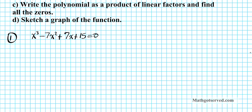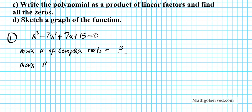So for part A, we're going to use the fundamental theorem of algebra to state the maximum number of complex roots. The maximum number of complex roots is equal to the degree of the polynomial function. So the degree is three, so you can have a maximum of three complex roots. The maximum number of real roots — if it has three complex roots and none of them are imaginary, that means all of them are going to be real. So the degree also tells you the maximum number of real roots. The degree is three, so the maximum number of real roots is three also.